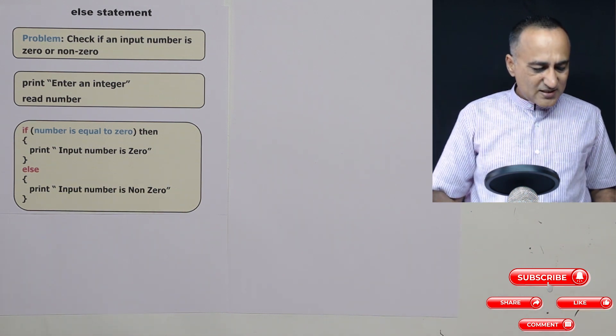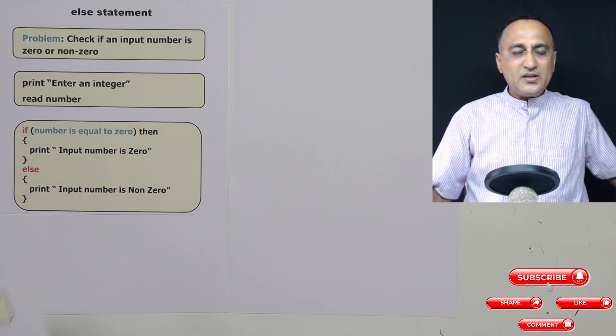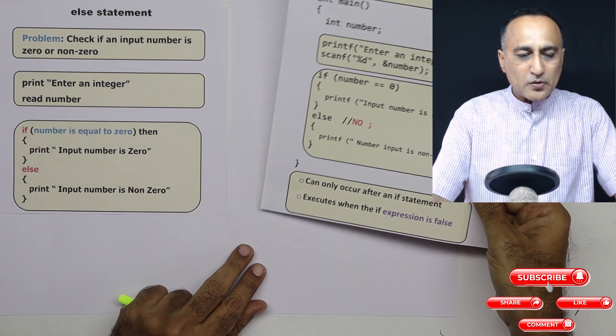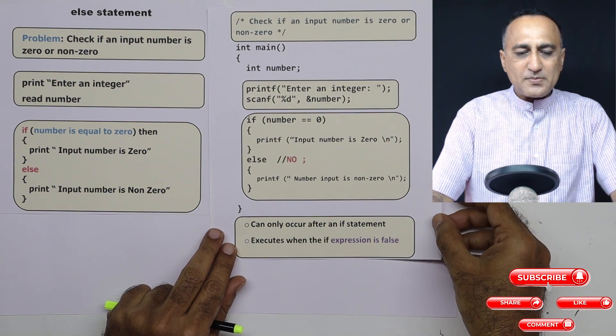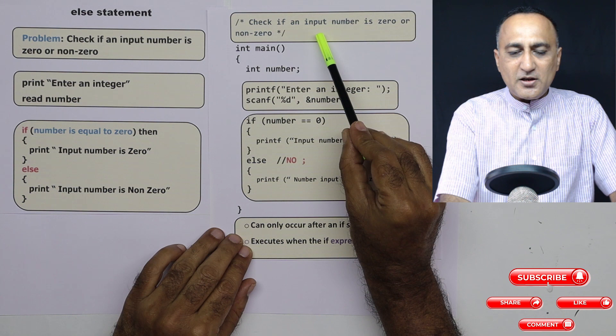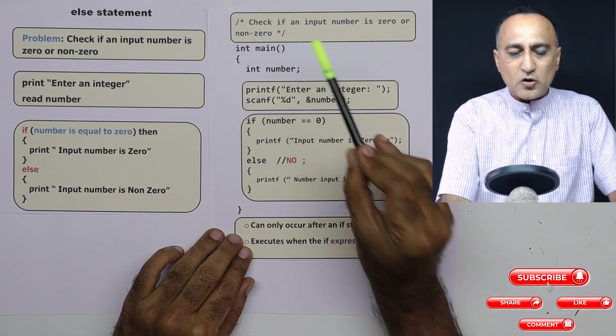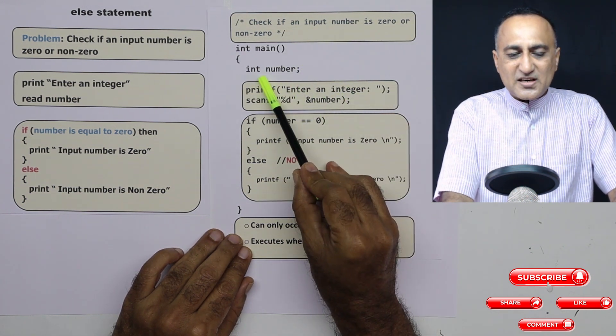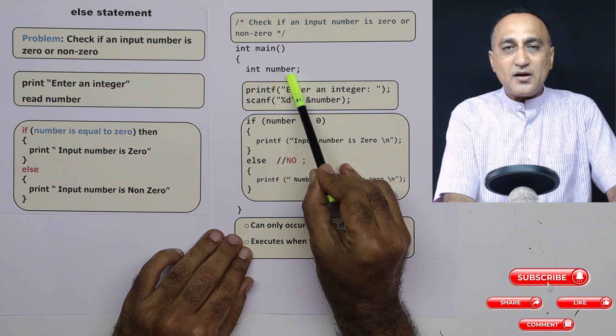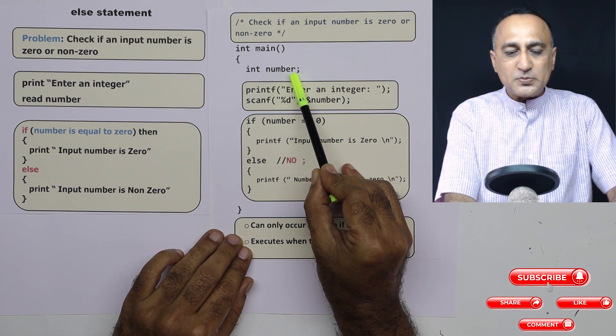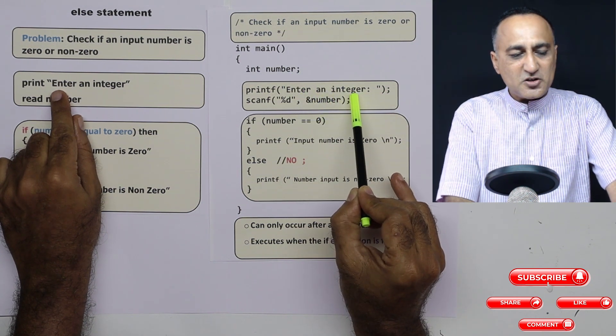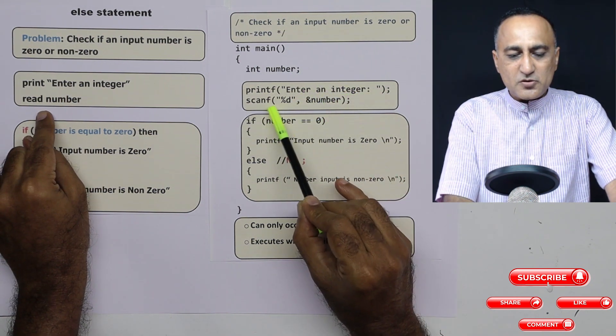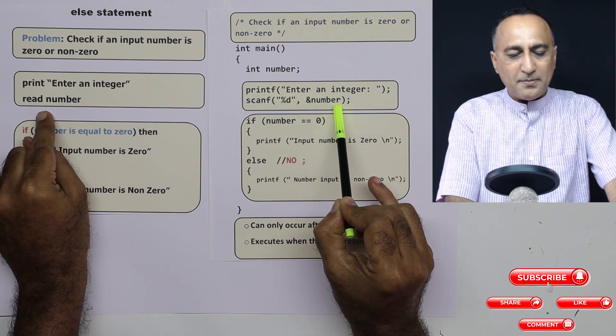So in order to understand it, let's compare it by writing a C program. The C program's job is to check if an input number is zero or non-zero. First, I need to declare a variable so that I can read a number into this particular variable. Enter an integer - here I am saying enter an integer, read a number. I am using scanf to read the number.